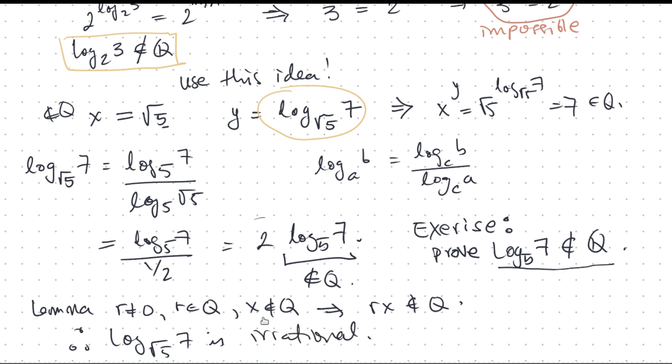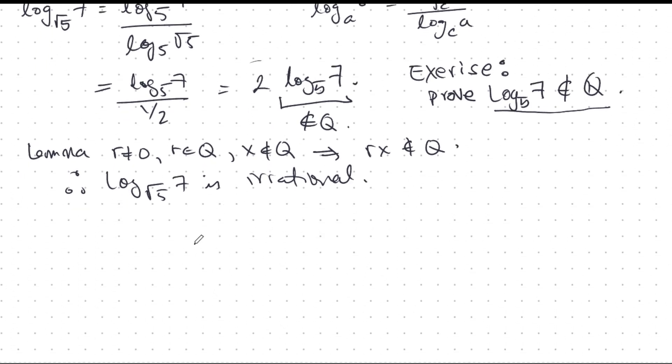And there we go. x power y is a rational number. As an exercise, you can try to think up more of these. I'm sure you can come up with an infinite number of examples, but they're fun to do.